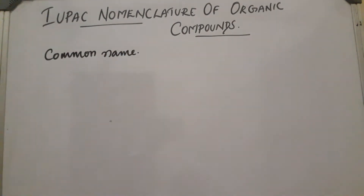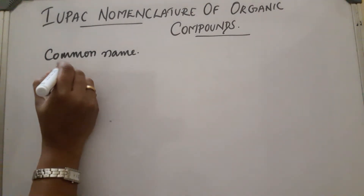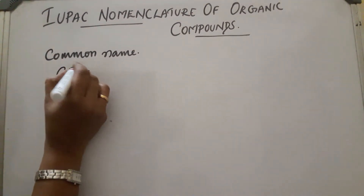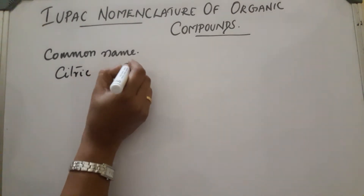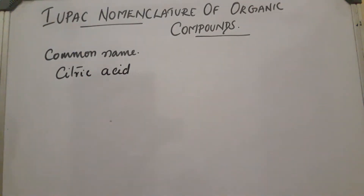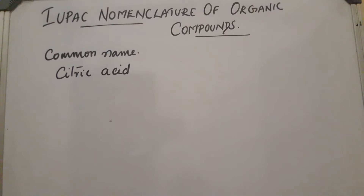For example, the acid present in citrus fruits is called citric acid — that is how the naming was done. Later, there are millions of organic compounds in the universe, so it is very difficult to name all those compounds. A new systematic method of naming was introduced, called the IUPAC method of naming.